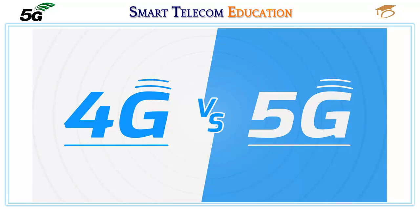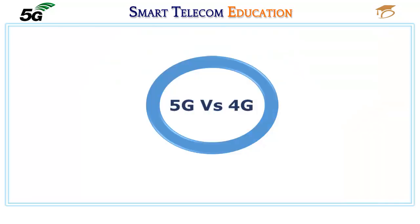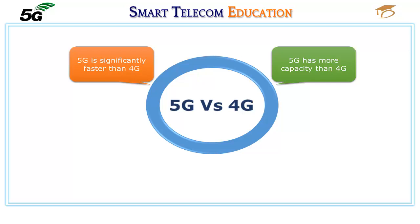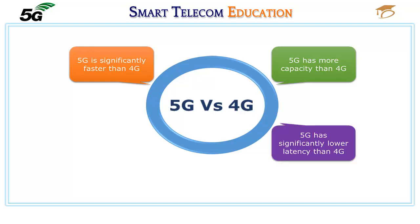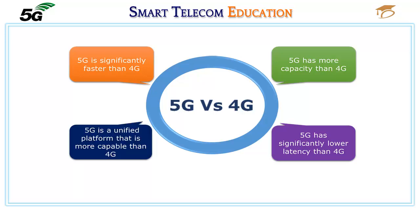How is 5G better than 4G? There are several reasons that 5G will be better than 4G. 5G is significantly faster than 4G, delivering up to 20 gigabits per second peak data rates and more than 100 megabits per second average data rates. 5G has more capacity than 4G, designed to support a 100x increase in traffic capacity and network efficiency. 5G has significantly lower latency than 4G, delivering a 10x decrease in end-to-end latency down to 1 millisecond for more instantaneous, real-time access.